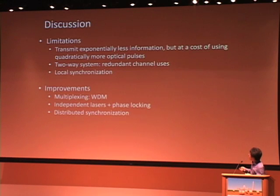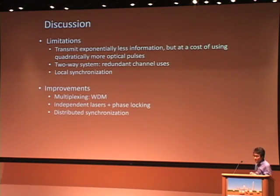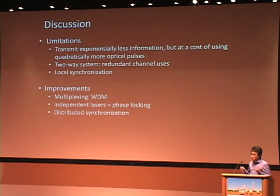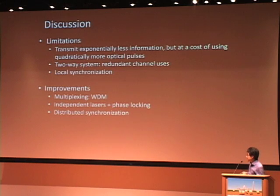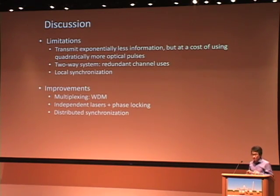Some discussions: one limitation of the coherent state quantum fingerprinting protocol is it requires more optical pulses. We have exponentially less information, but the cost is quadratically more optical pulses. Also, our system is a two-way system with redundant channel use, and we only do synchronization locally. Future improvements include WDM — encoding multiple bits on a single pulse — transmitting a large number of pulses, using independent lasers with phase locking as in device-independent QKD, moving to a one-way system, and using distributed synchronization.